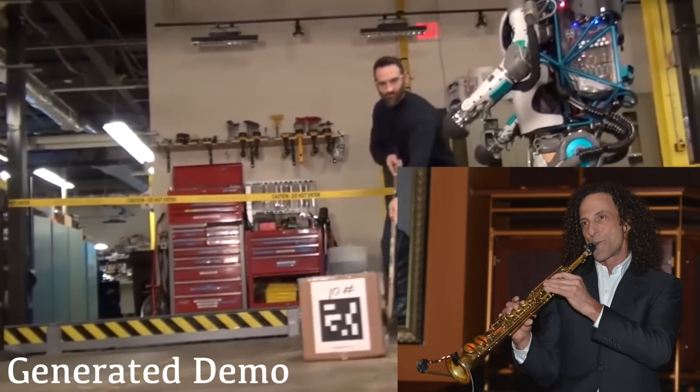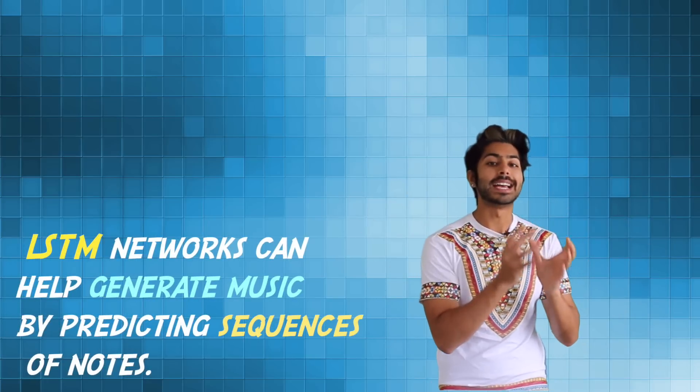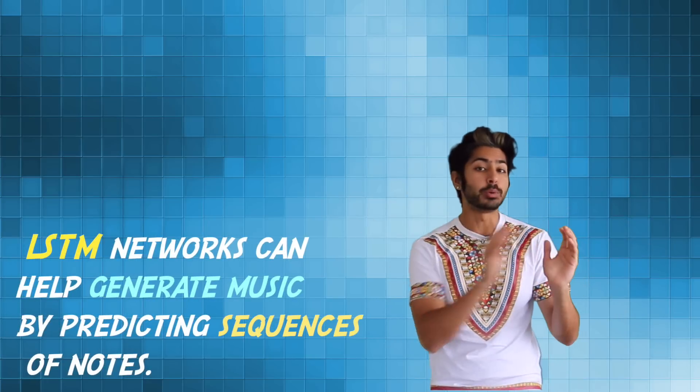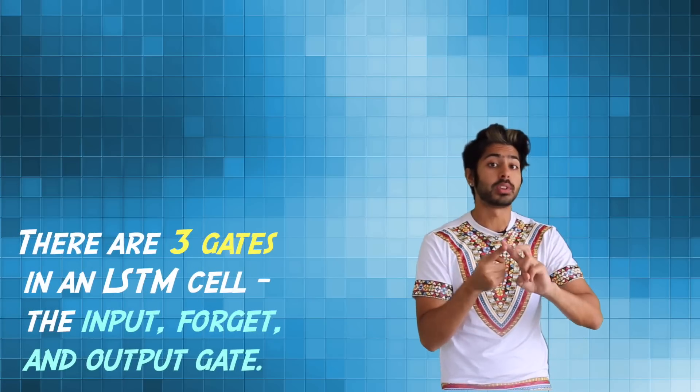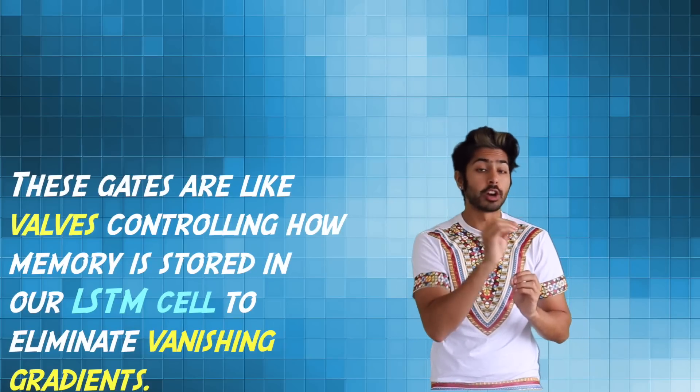At least it's better than Kenny G's, so we're all good. So to break it down, we can generate music using LSTM networks to predict sequences of notes. LSTMs consist of three gates, the input, forget, and output gate. And we can think of these gates as valves, controlling how memory is stored in our network to eliminate vanishing gradients.